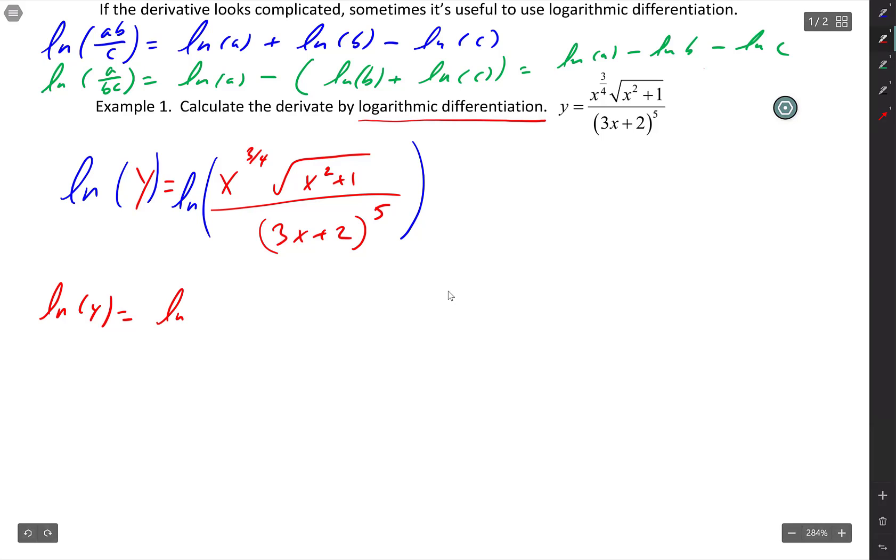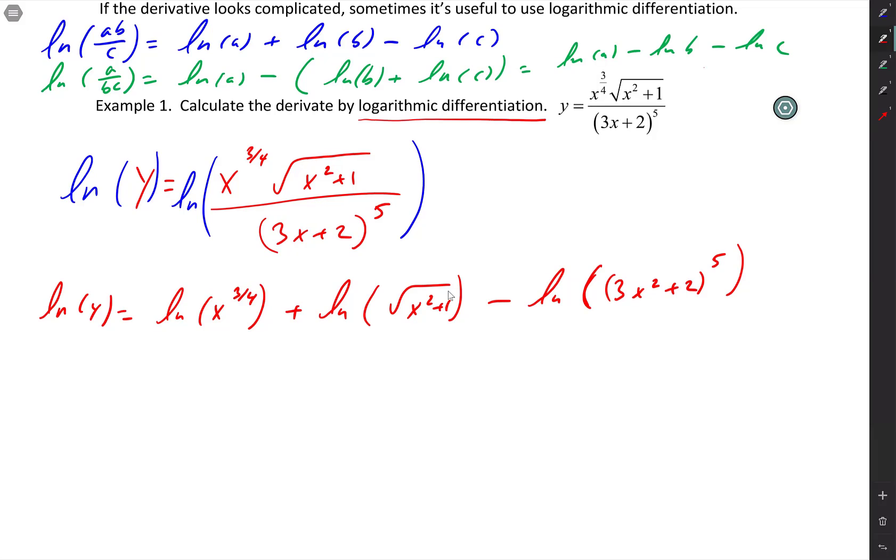So I can write ln of x to the 3/4. And you don't necessarily need to put a parenthesis. You can just say x to the 3/4 together because it's understood. But I like to put them so we can show ln of square root of x squared plus 1 minus ln of 3x plus 2 to the 5th. And if you want to put a double parenthesis like that to showcase. All right, so now what I'm going to do?